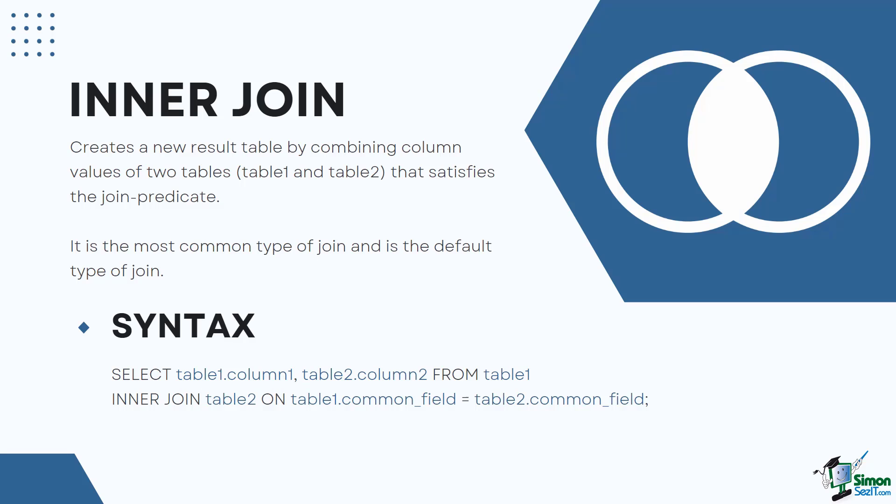An inner join only outputs the common records between the tables. It is the most common type of join and is the default type of join — you can use the inner keyword optionally. The following is the syntax of inner join.